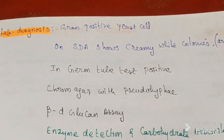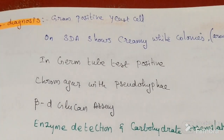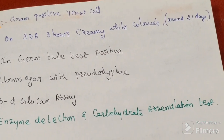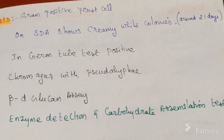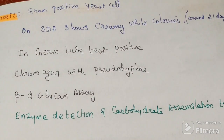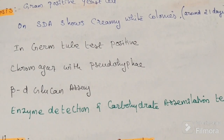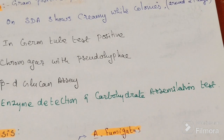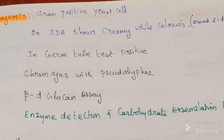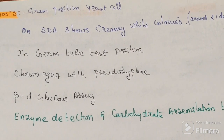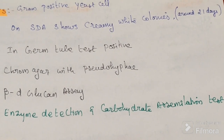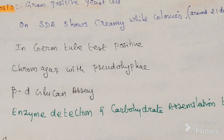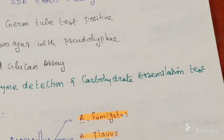For laboratory diagnosis of candidiasis: it is a gram-positive yeast cell grown on Sabouraud dextrose agar medium, showing creamy white color colonies. The germ tube test is positive. Chrome agar shows pseudohyphae. Additional tests include beta-D-glucan assay, enzyme detection, and carbohydrate assimilation test.